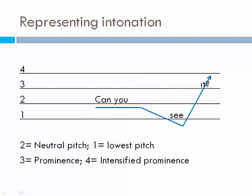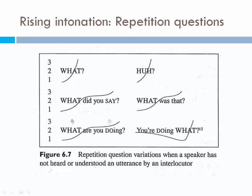In yes or no questions, your voice goes up: 'Can you see it?' There is a rise in intonation at the end. Rising intonation is also used in repetition questions — when a speaker has not heard or understood what someone said. These questions ask the person to repeat the information. For example: 'What?', 'Huh?', 'What did you say?', 'What was that?', 'You're doing what?' Based on the intonation pattern you use, the person understands they need to repeat what they said.